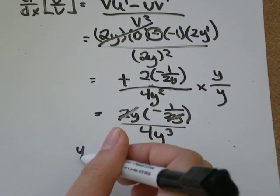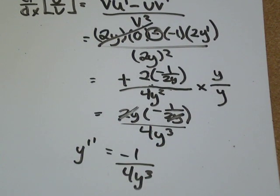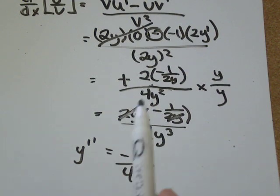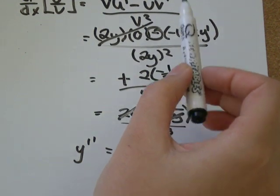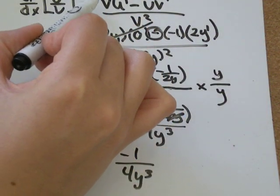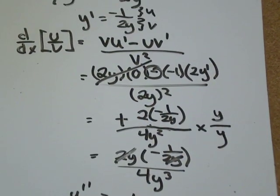So I would say that is equal to y double prime. And that's all you have to do. So all you do is take the derivative once and say y' equals. Take the derivative again. And then when you do that, wherever you see a y', just substitute what you found y' was equal to initially.